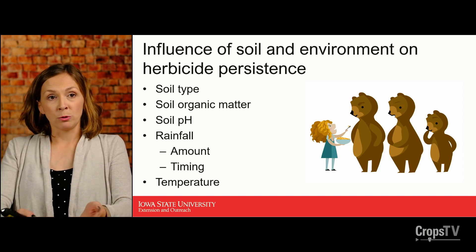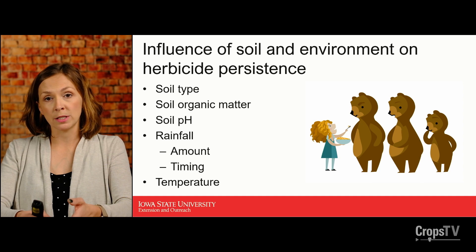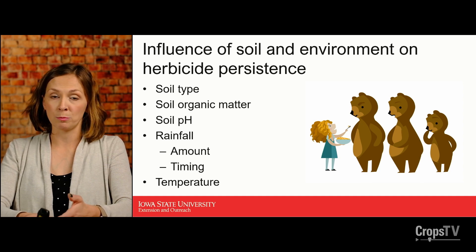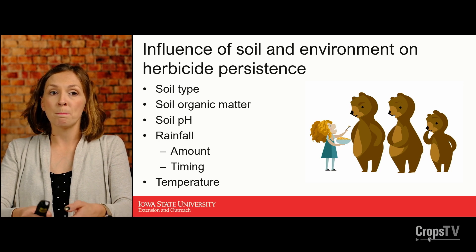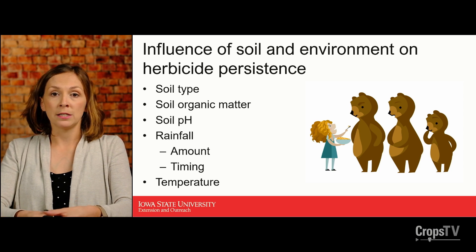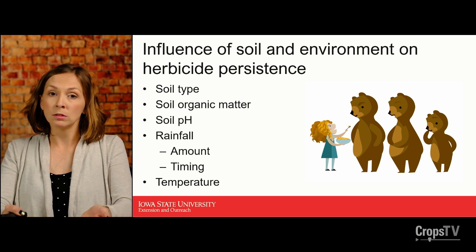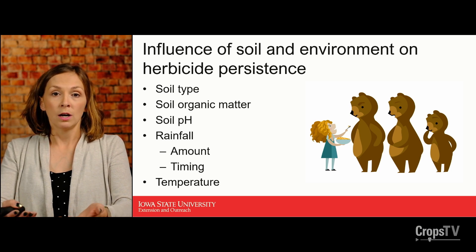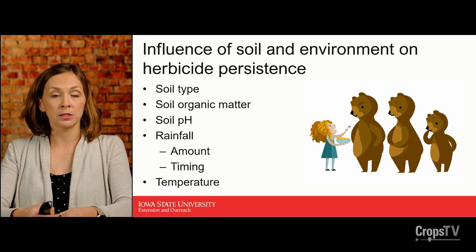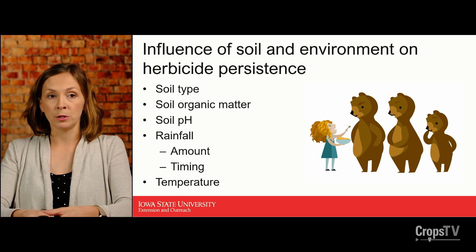The environment within the soil beyond soil type, organic matter, and pH is hugely important. Rainfall and temperature are big driving factors in our breakdown processes. For rainfall, we consider both the amount and the timing, because rainfall shortly after application is more likely to jump-start herbicide breakdown rather than rainfall that comes long after. As for temperature, we want ample warmth in the soil but not too hot, because microbial processes are extremely important for herbicide breakdown and excessive heat could slow those microbial processes.